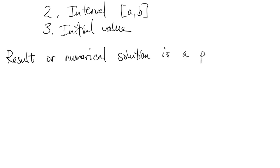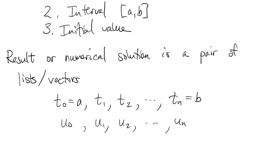The result of a numerical solution is a pair of vectors. We have t0, t1, t2, and so on up to tn, which are nodes in the t domain. And we also have u0, u1, and so on up to un. The value u sub i is meant to approximate the solution at time t sub i.